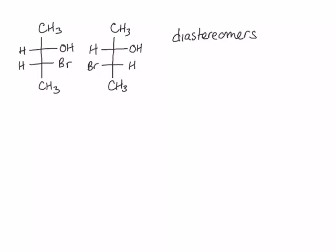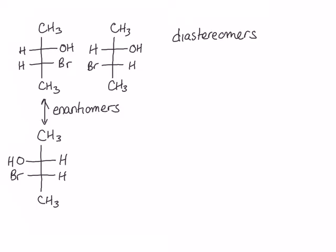Remember that enantiomers are mirror image stereoisomers. This molecule is the mirror image isomer of the structure on the top left. Therefore, these two are enantiomers. The relationship of each of the enantiomers to the third molecule is diastereomers, because they are stereoisomers that are not mirror images.